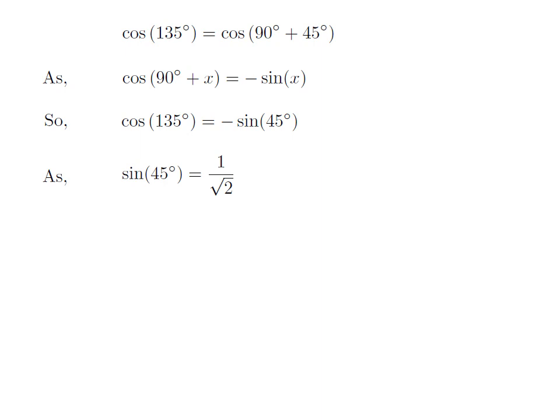We know the value of sine of 45 degrees is equal to 1 upon square root of 2. So, value of cosine of 135 degrees is equal to minus 1 upon square root of 2.